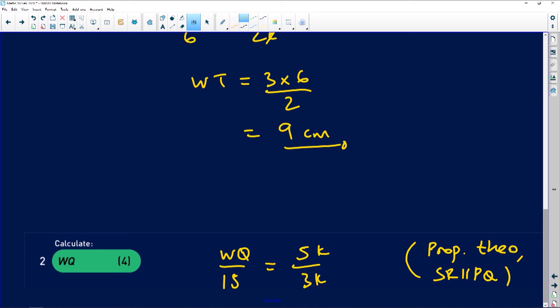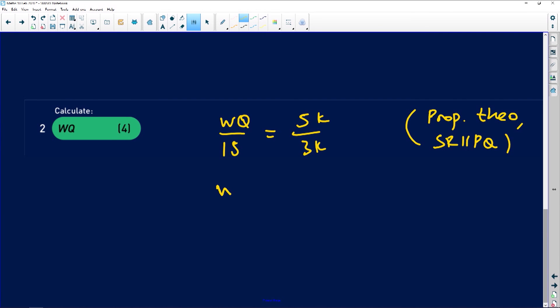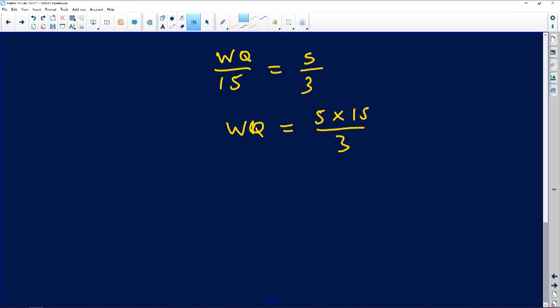Then you'll just finish this off by saying WQ divided by 15, the k and the k will cancel, just left with 5 over 3. And then WQ is going to be equal to 5 times 15 divided by 3, and then this should give you exactly 25 centimeters. And that is the length of your WQ, very powerful.